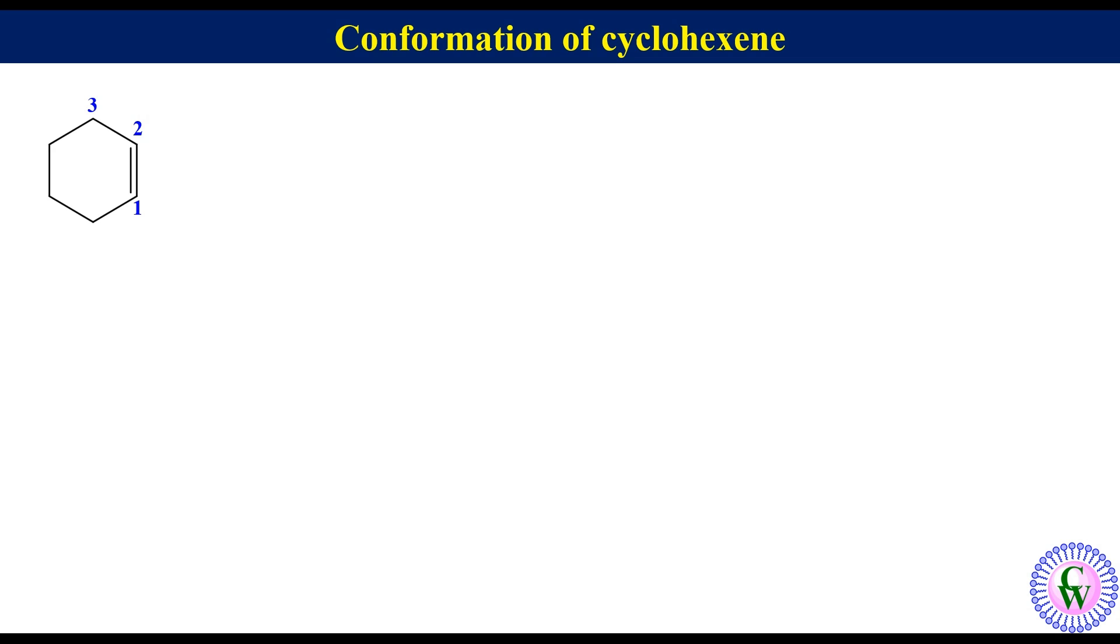Here we can see that C1 and C2 are sp2 carbon atoms. Because of this, the four carbon atoms C6, C1, C2, and C3 must lie in the plane like this, with the remaining two carbon atoms placed one above and one below that plane.